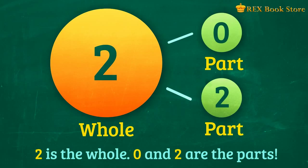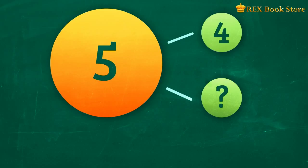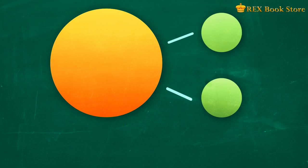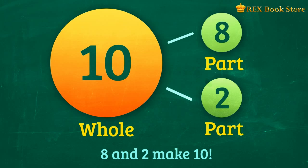Now let's practice our skill in completing the number bond. Can you name the missing part? Right! 4 and 1 make 5. How about for this number bond? What is the missing part? That's right! 8 and 2 make 10.